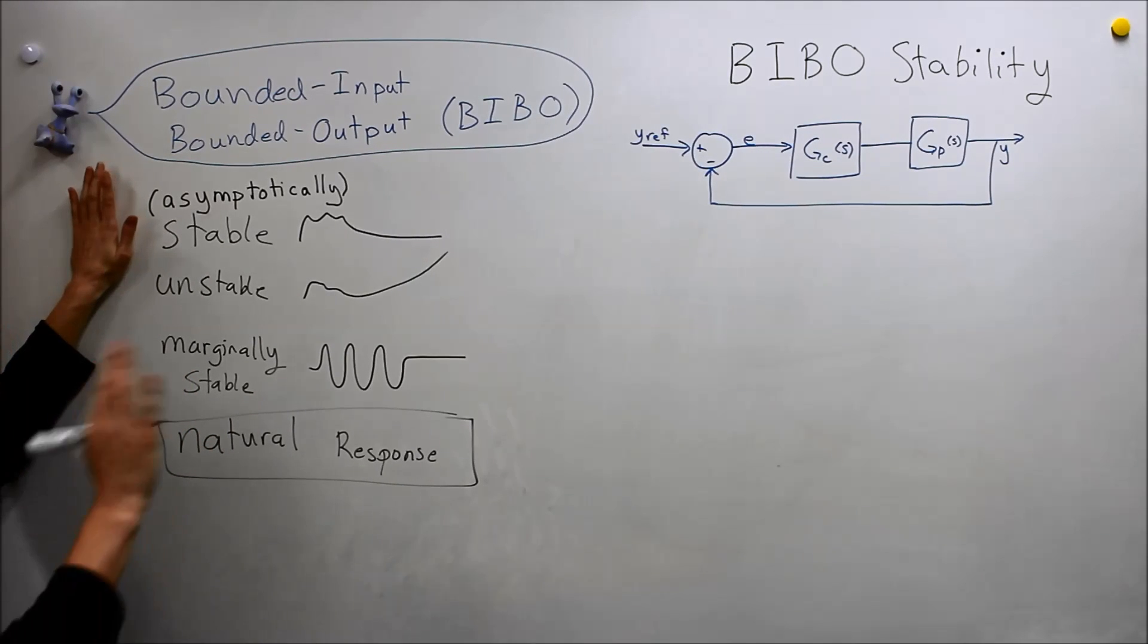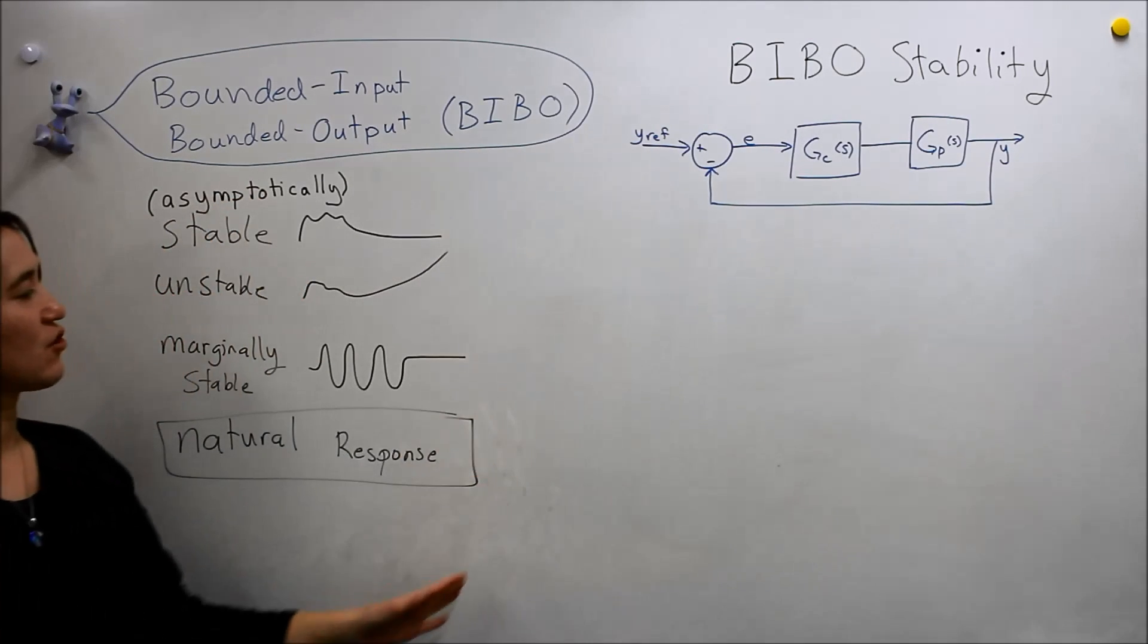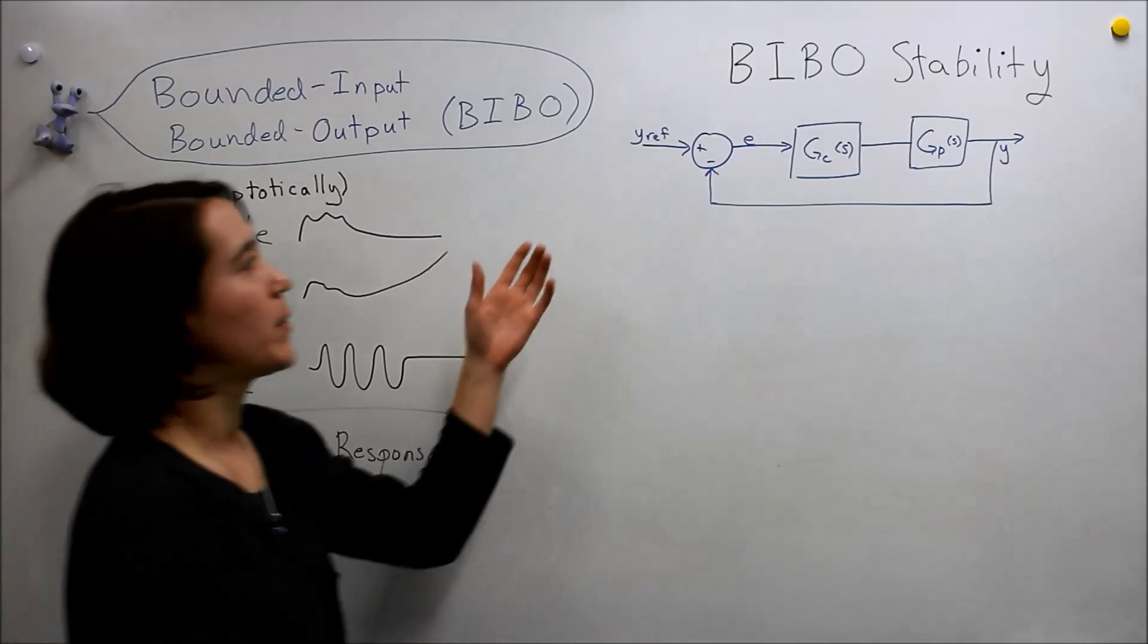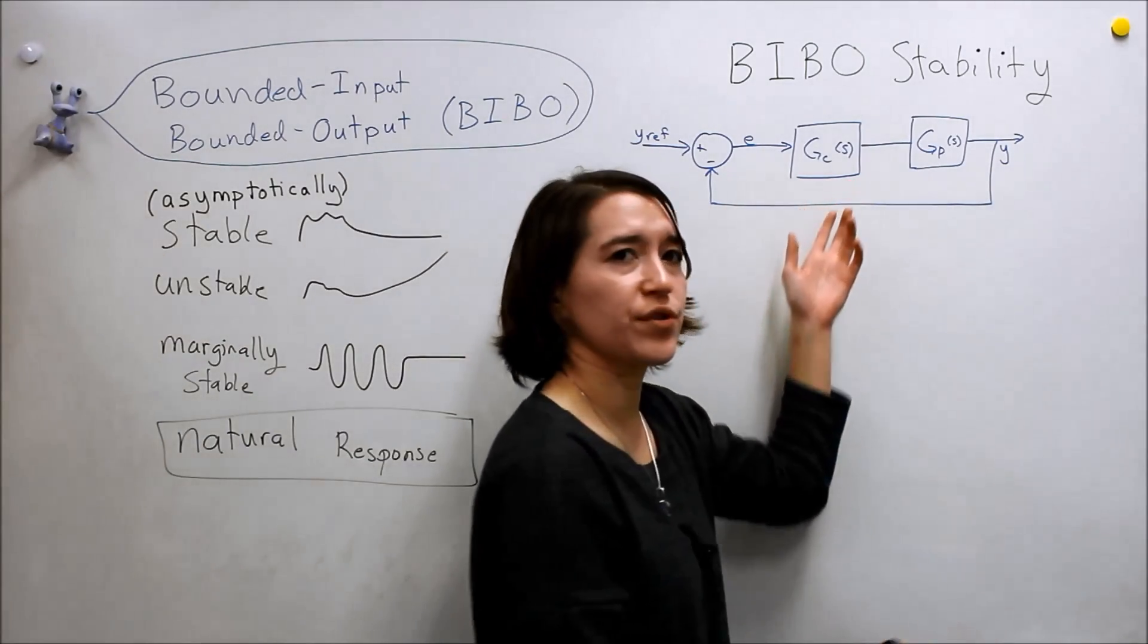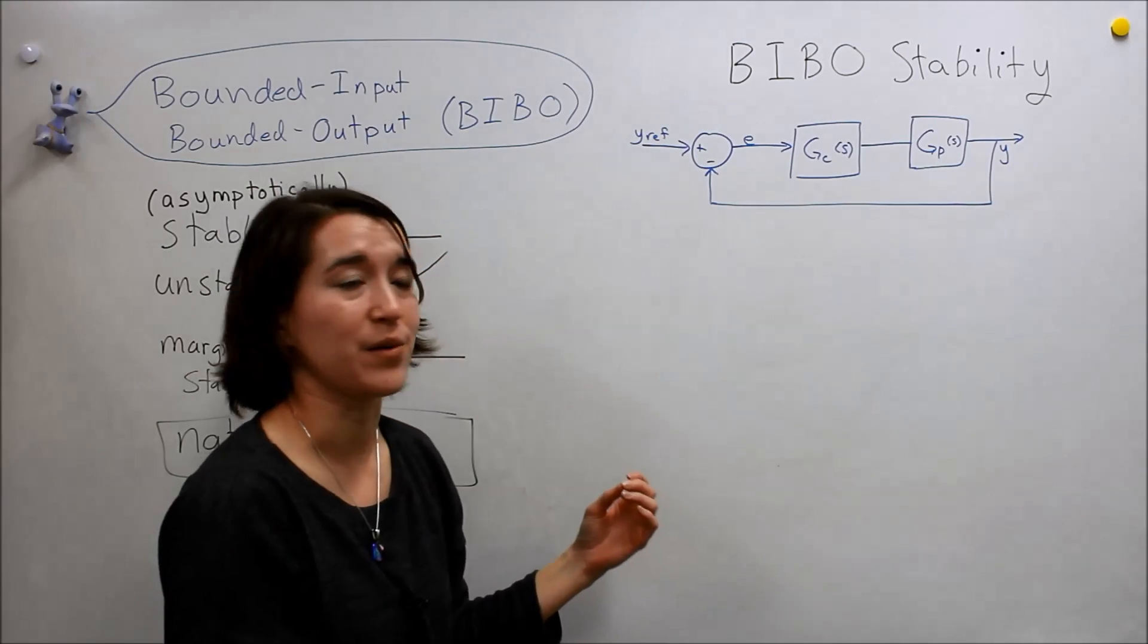But now we're working with full systems. So the natural response is still, you can kind of describe it in these ways. But when we have this control system, there's also a forced response, and that can be a non-zero value.